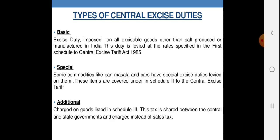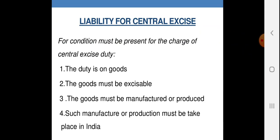Additional यानि आधिक्य कर — charged on goods listed in Schedule 3. This tax is shared between Centre and State Governments and is charged in place of Sales Tax. एक सारणी तृतीय (Third Schedule) बनाई है जिसके अंदर वे कर हैं जो केंद्र सरकार और राज्य सरकार दोनों में बांटे जाते हैं, और sales tax की जगह राज्य सरकार अपना हिस्सा Additional Central Excise Duty के रूप में प्राप्त करती है।